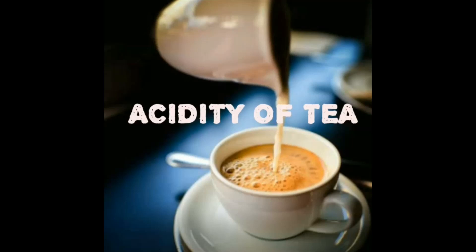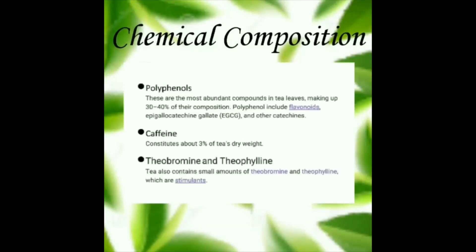Before getting into my topic, let us first investigate on the chemical composition of tea. Tea leaves consist of polyphenols, caffeine, theophylline and theobromine. Polyphenols is the major constituent of tea and constitute about 30-40% of their composition.